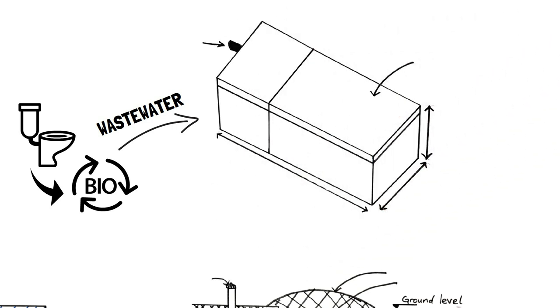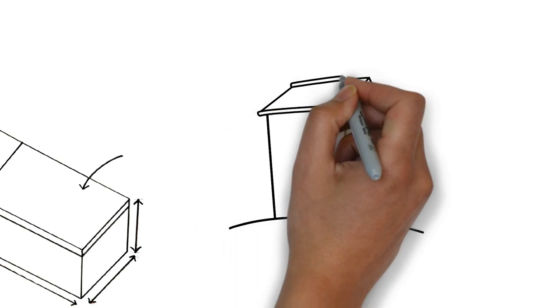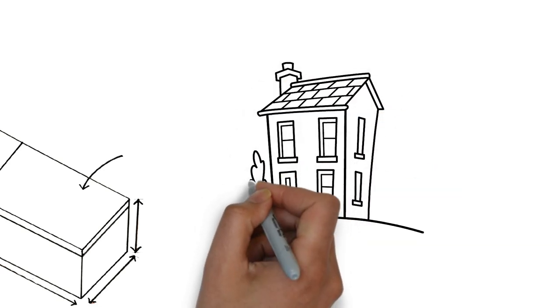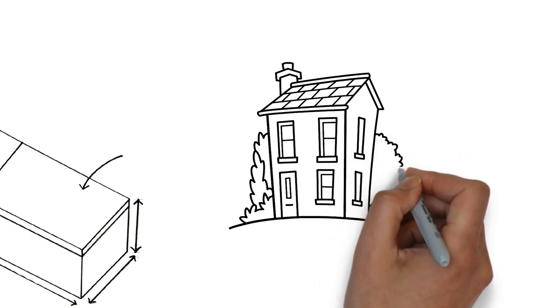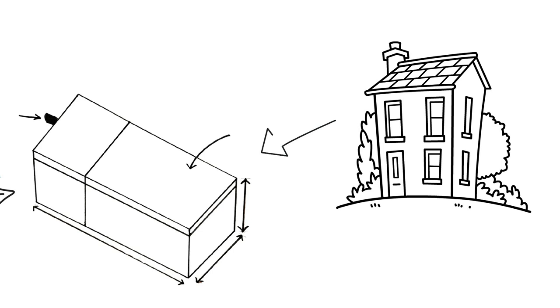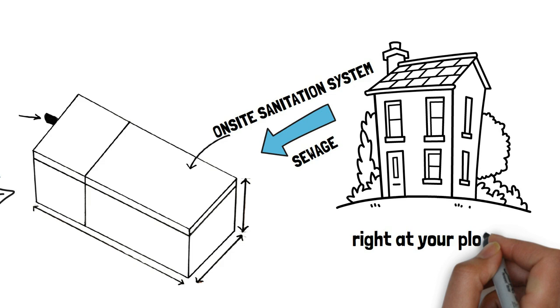This video exists because, unfortunately, off-site sanitation systems are quite few in Kenya, and chances of your home being connected to a sewer line is small. Even after investing thousands or millions of shillings into your beautiful home, you'll have to handle your sewage yourself. That means investing in an on-site sanitation system, a system that treats your waste right at your plot.